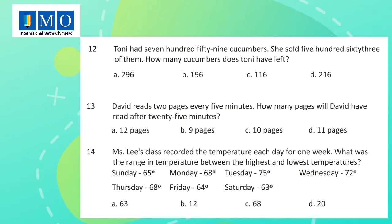Question 14: Miss Lee's class recorded the temperature each day for one week. What was the range of temperature between the highest and the lowest temperatures? Sunday 65°, Monday 68°, Tuesday 75°, Wednesday 72°, Thursday 68°, Friday 64°, Saturday 63°.